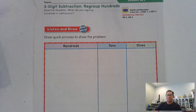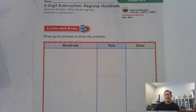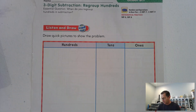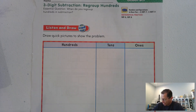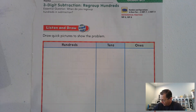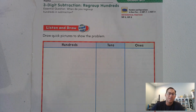Listen to the following problem and draw a quick picture to find the difference. Pause the video as you're drawing your quick picture and finding the difference. The reading club has 349 books; 173 of the books are about animals. How many books are not about animals? Go ahead and pause the video and draw your quick picture to find the difference.